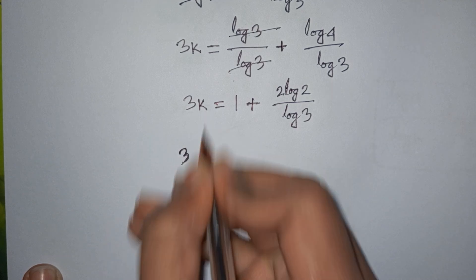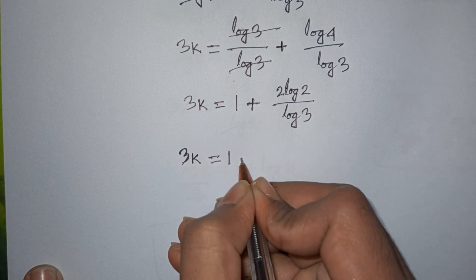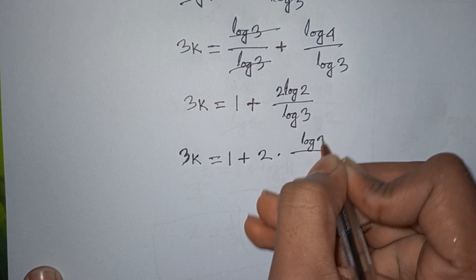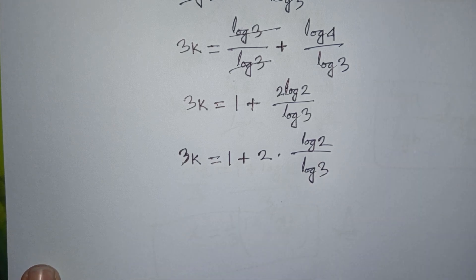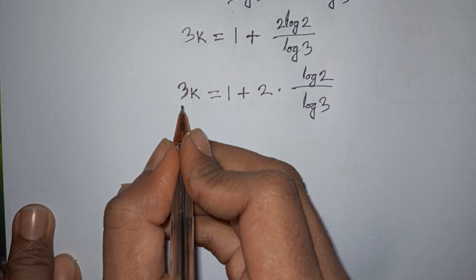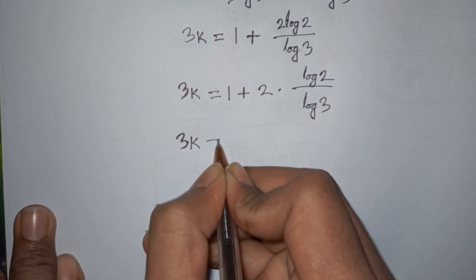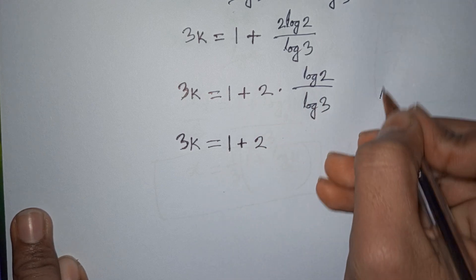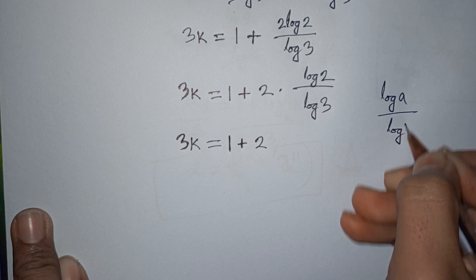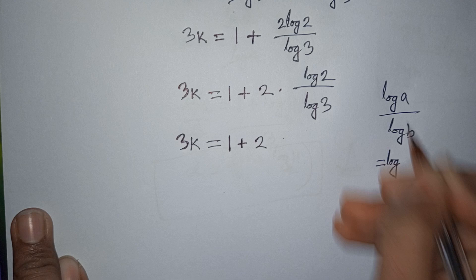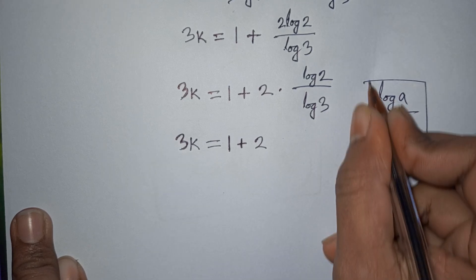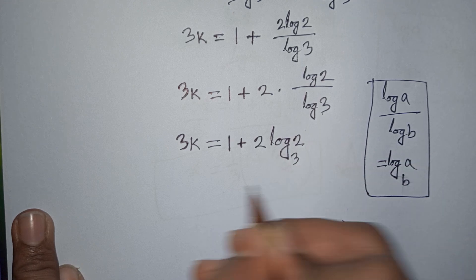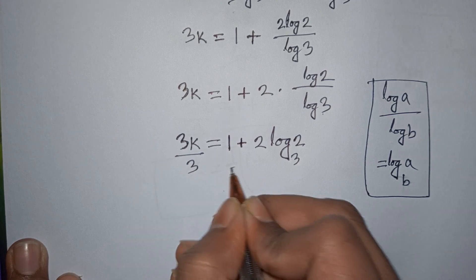So 3k equals 1 plus 2·log(2)/log(3). Using the change of base formula, log(a)/log(b) equals log base b of a, so 2·log(2)/log(3) becomes 2·log base 3 of 2. Now we divide both sides by 3 to solve for k.